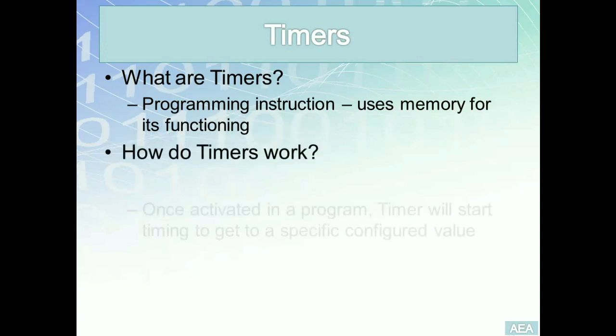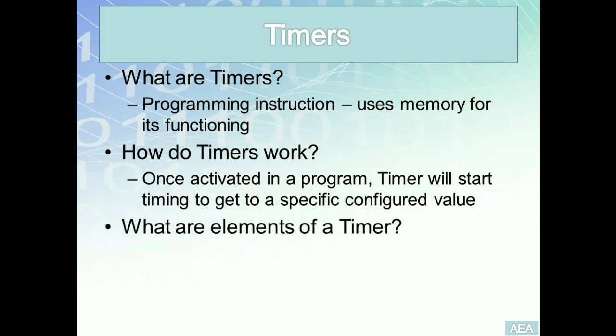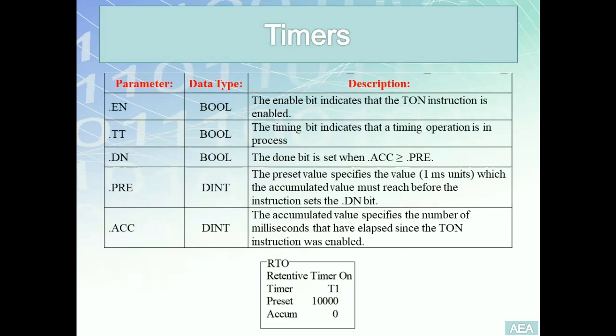Once a timer is activated in the program, it will start timing to reach a specific configured value. The parameters of a timer include two double integers — the preset value and the accumulator value — and three Boolean parameters: the enable bit, the timer timing bit, and the done bit. Having a good understanding of all these parameters will enable us to successfully integrate a timer into our solution.